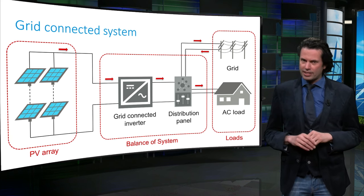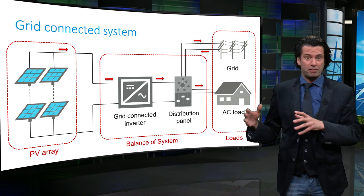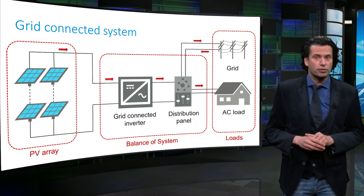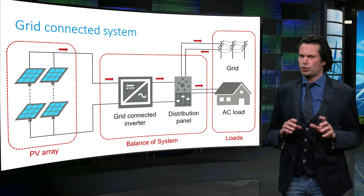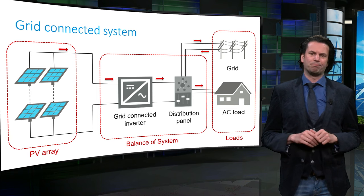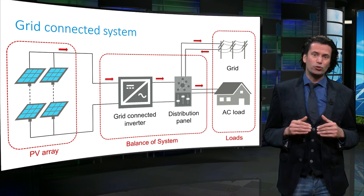In a grid connected system, there are two main components, an array of PV modules and a grid connected inverter. In this case, the PV modules are responsible for the power generation.